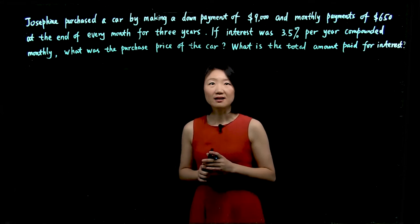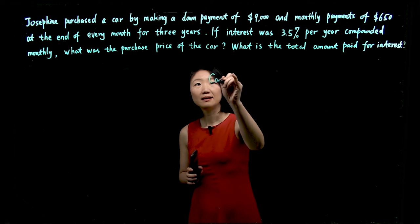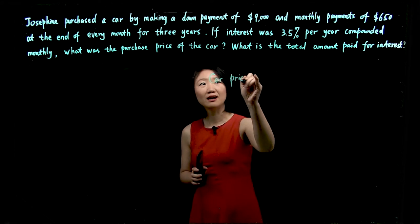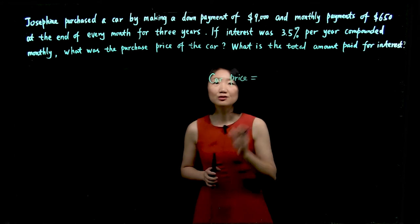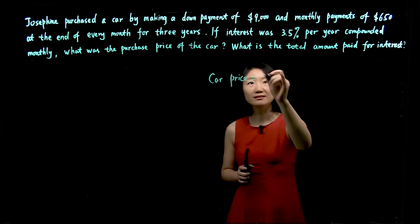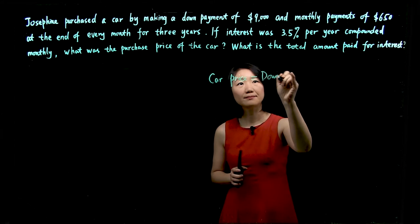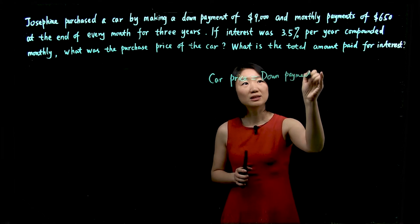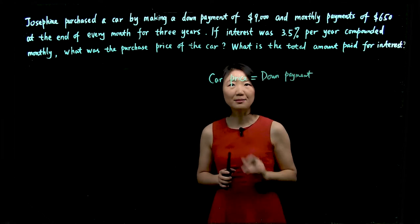So the day Josephine purchased the car, she needed to pay for the car price. She came up with $9,000, that's the down payment, which is not enough to cover the car price.